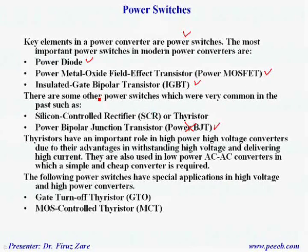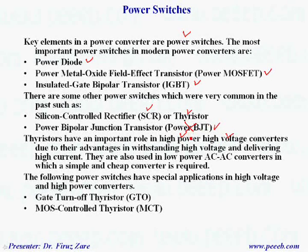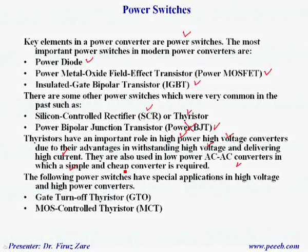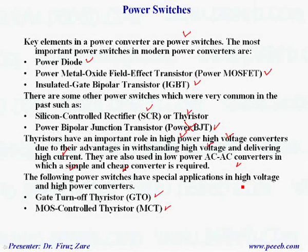The next one is silicon controlled rectifier, SCR, or thyristor. This type of switch has an important role in high-power, high-voltage converters because they can withstand high voltage and deliver high current. They are also used in low-power AC-AC converters where a simple and cheap converter is required. There are two other switches — GTO and MCT — with special applications in high-voltage, high-power systems, especially in power systems suitable for renewable energy applications, reactive power control, and active power filters.